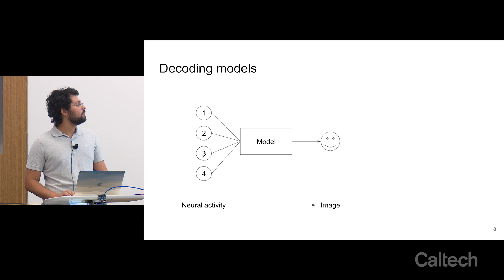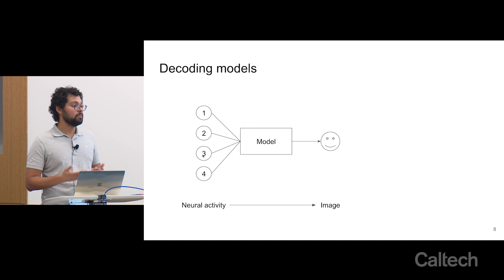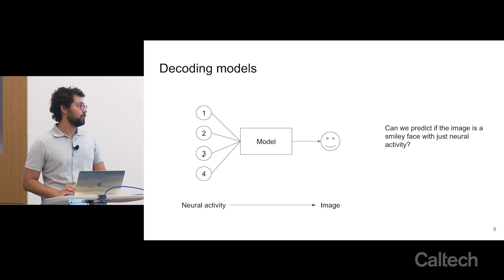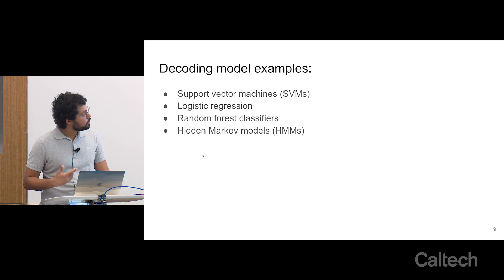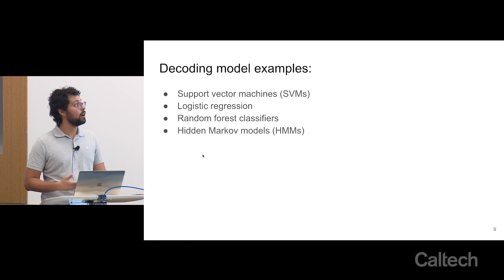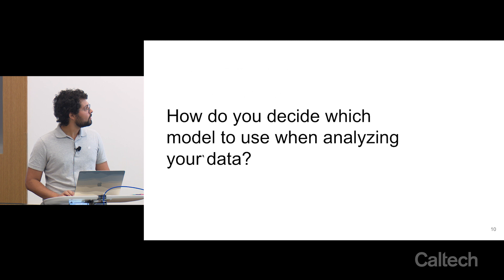The other side of this are decoding models, which are really just a flipped image of the encoding models. Here we have neural activity passed to some model, and the question we're trying to address is: can we predict if the image is a smiley face with just neural activity? Examples of decoding models include support vector machines used for classification problems, logistic regression, which is highly used in psychophysics, random forest classifiers, and hidden Markov models — which are covered in more detail in Matt Whiteway's talk.